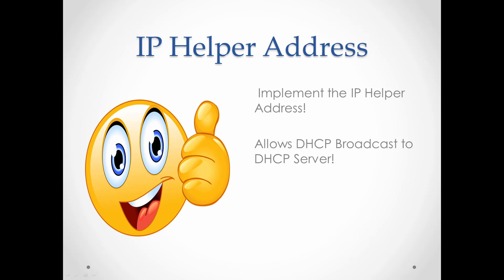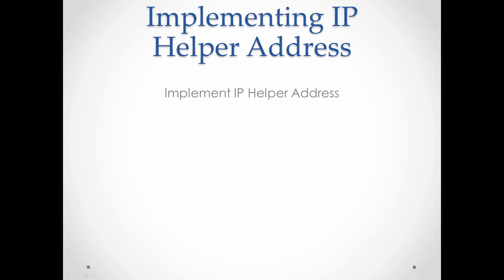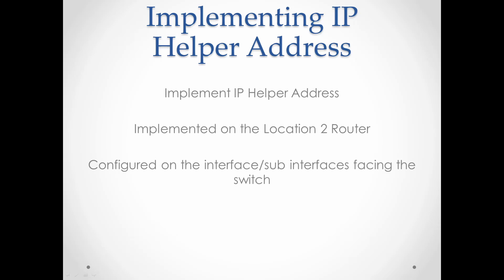That's where the IP Helper Address comes into play. The IP Helper Address allows a router to forward a DHCP broadcast to a DHCP server - the router acts as a DHCP relay agent and passes the DHCP broadcast to where it needs to go. In this topology, the DHCP server is on a completely different network. We will need to implement the IP Helper Address on the Location 2 router, placing it as close to the computers as possible - specifically on the interfaces or sub-interfaces facing the switch. The command is: ip helper-address followed by the address of the DHCP server.